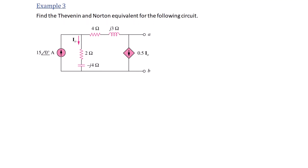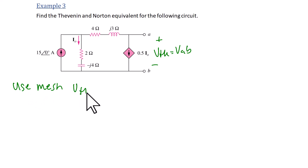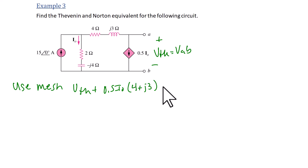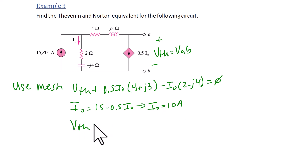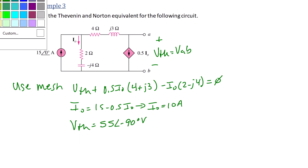Example 3: Find the Thevenin and Norton equivalent for a circuit with a current-controlled current source 0.5I_0 and an independent current source 15 angle 0 degrees. We cannot use source transformations, so we'll use the open circuit and short circuit methods. First, finding V Thevenin = VAB using the mesh current method. The KVL equation for the second loop is 0.5I_0 times (4 + J3) minus I_0 times (2 minus J4) plus V Thevenin = 0. The constraint is I_0 = 15 minus 0.5I_0, so I_0 = 10 amps. Solving gives V Thevenin = 55 angle negative 90 degrees.